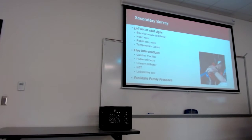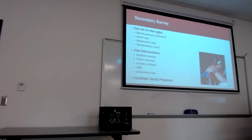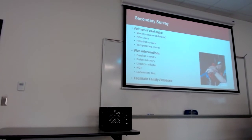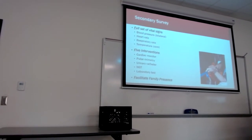If they have heart failure, they're going to get a BNP. If they have renal failure or liver failure, we'll focus on different labs depending on their complaint and history. But right off the bat, the baseline is a CBC and a comprehensive. For female patients, they're getting a pregnancy test — typically if they're less than 40.